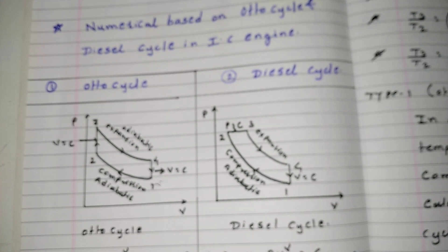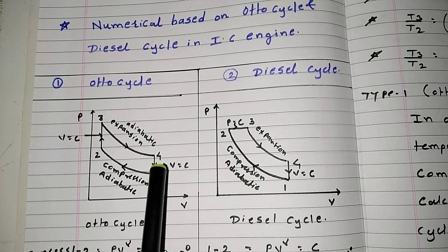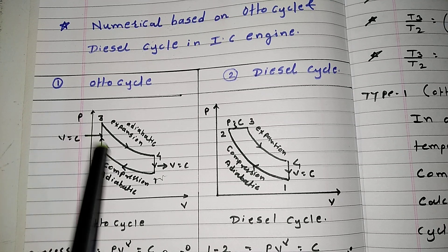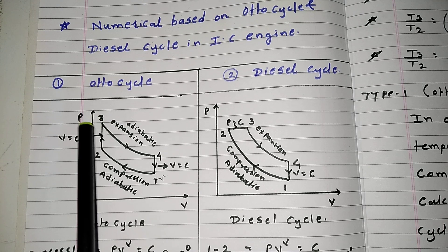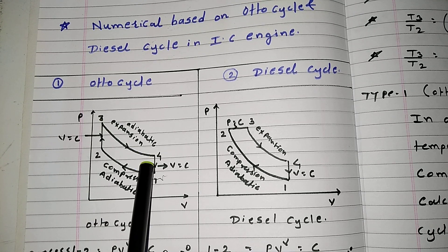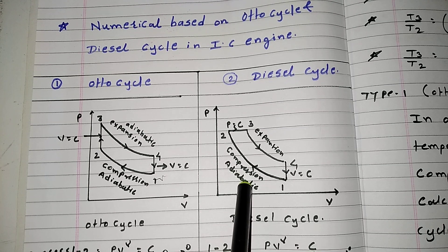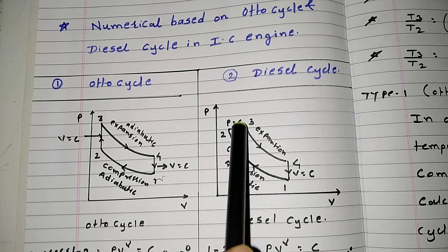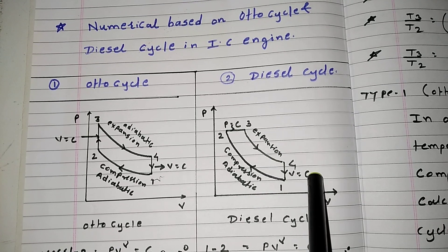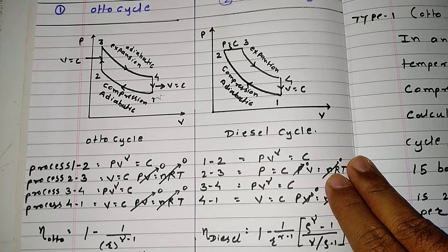Before we discuss, let's understand the formulas first. This is the Otto cycle diagram and this is the diesel cycle diagram. In the Otto cycle: process 1 to 2 is adiabatic compression, 2 to 3 volume is constant and heat is added, 3 to 4 is adiabatic expansion, and 4 to 1 heat is rejected at constant volume. In the diesel cycle, 1 to 2 is the same adiabatic compression, but process 2 to 3 pressure is constant, 3 to 4 is adiabatic expansion, and 4 to 1 volume is constant.